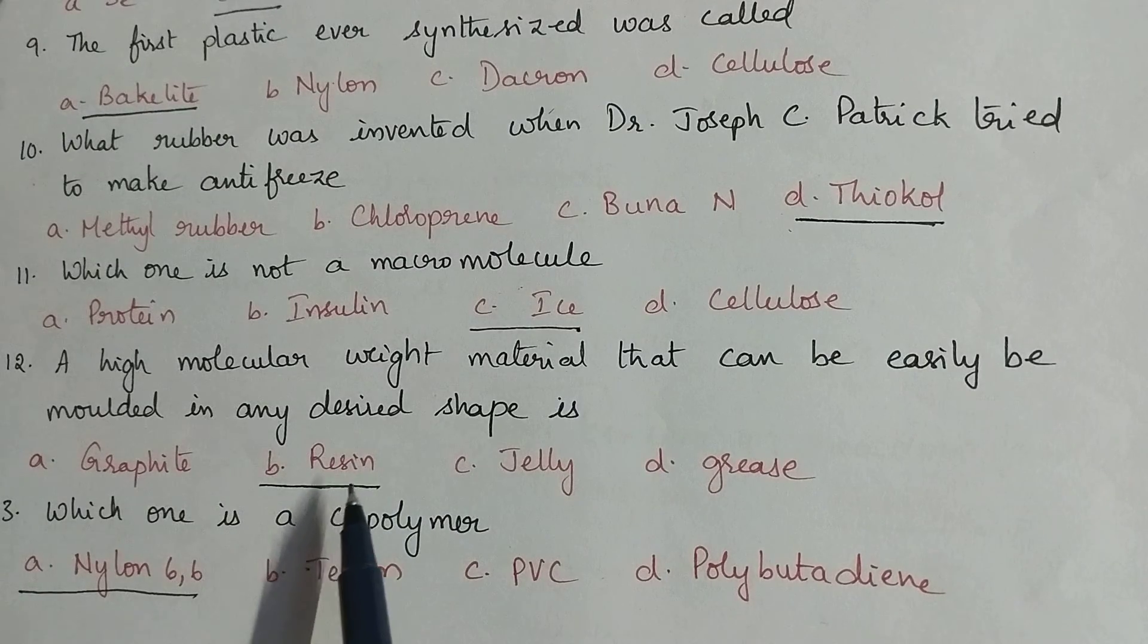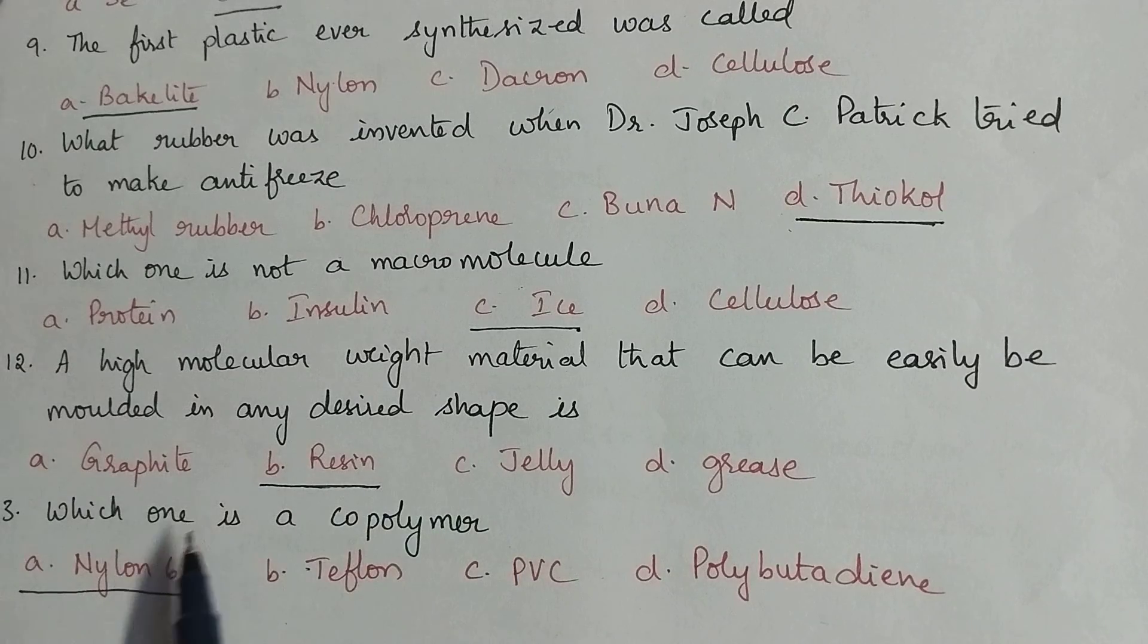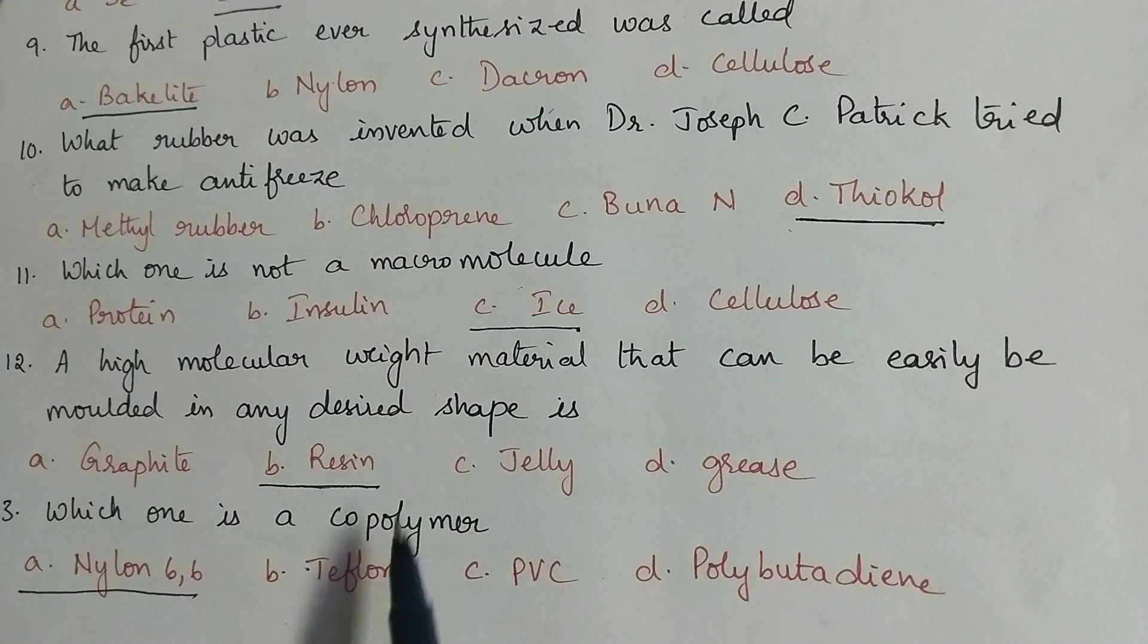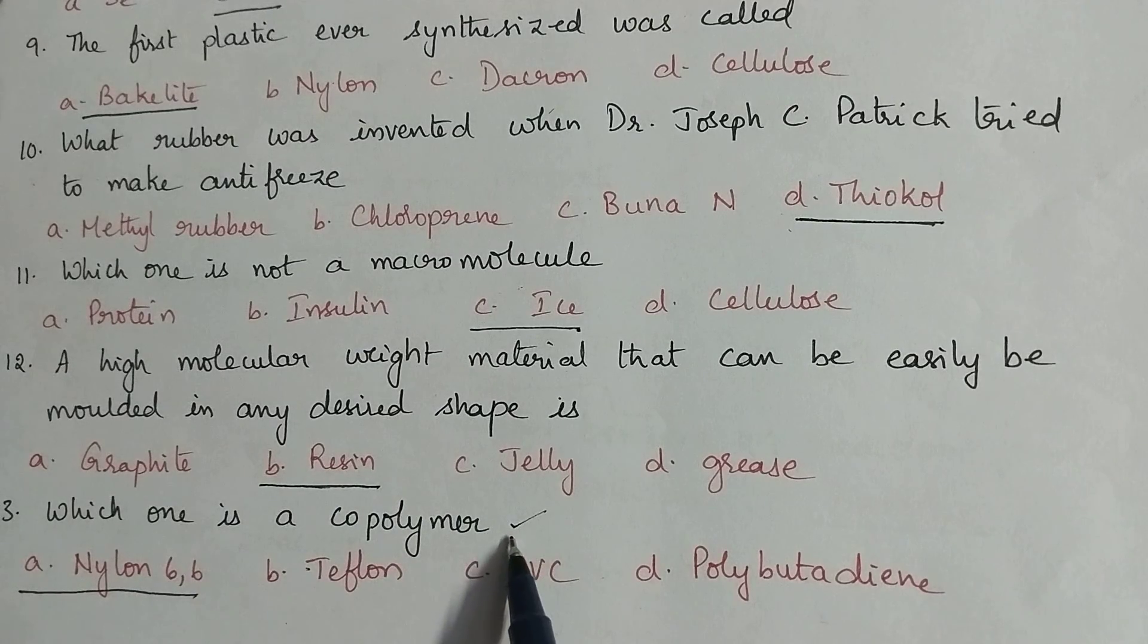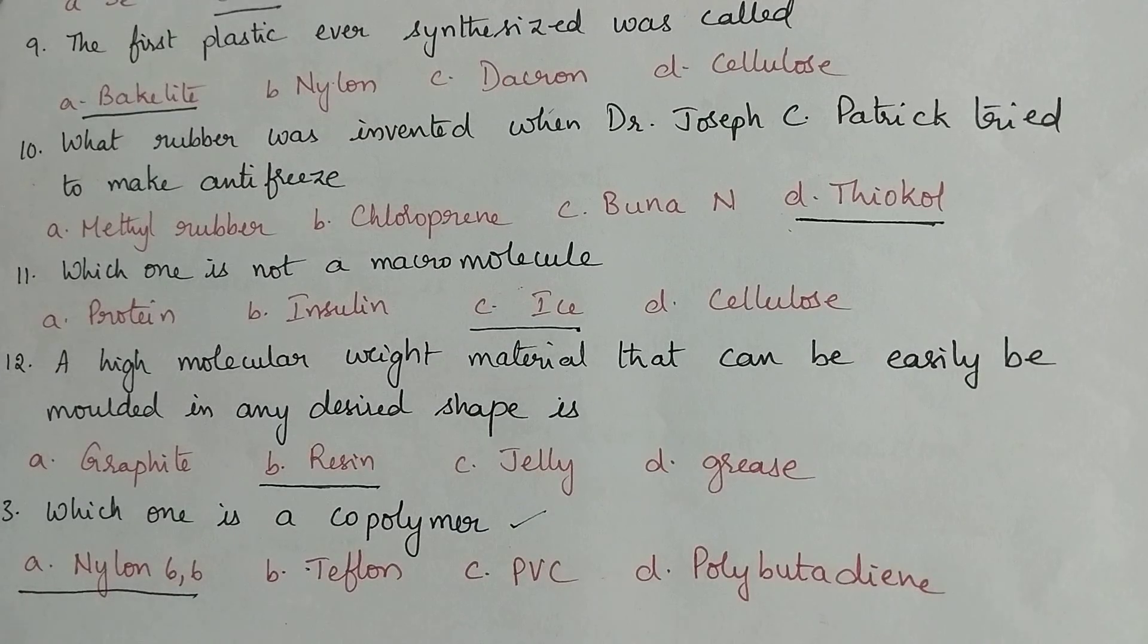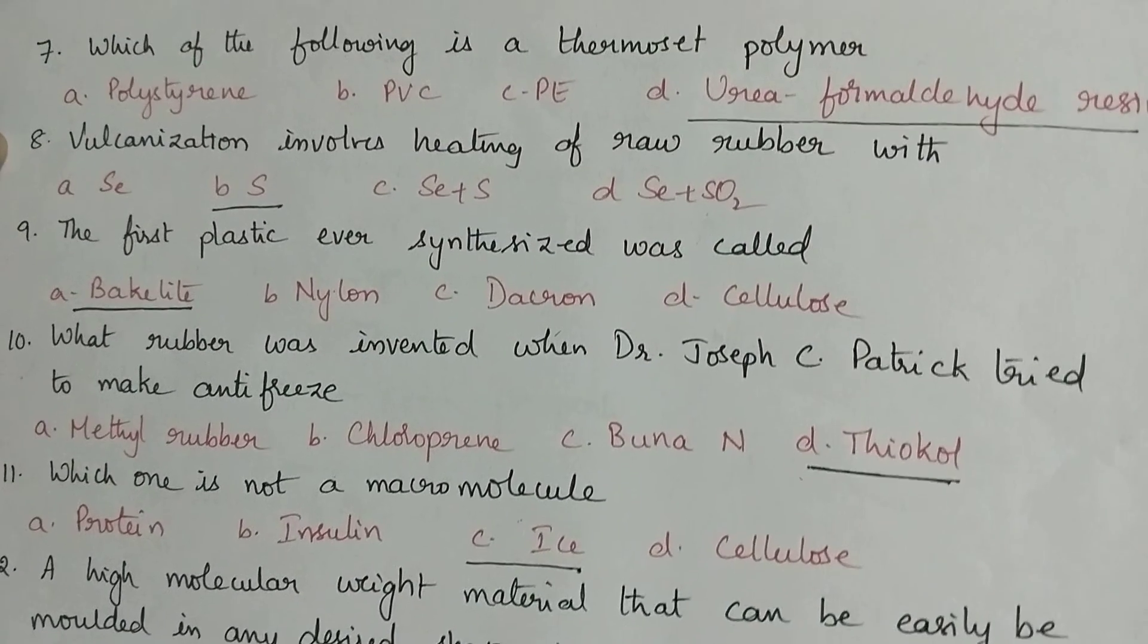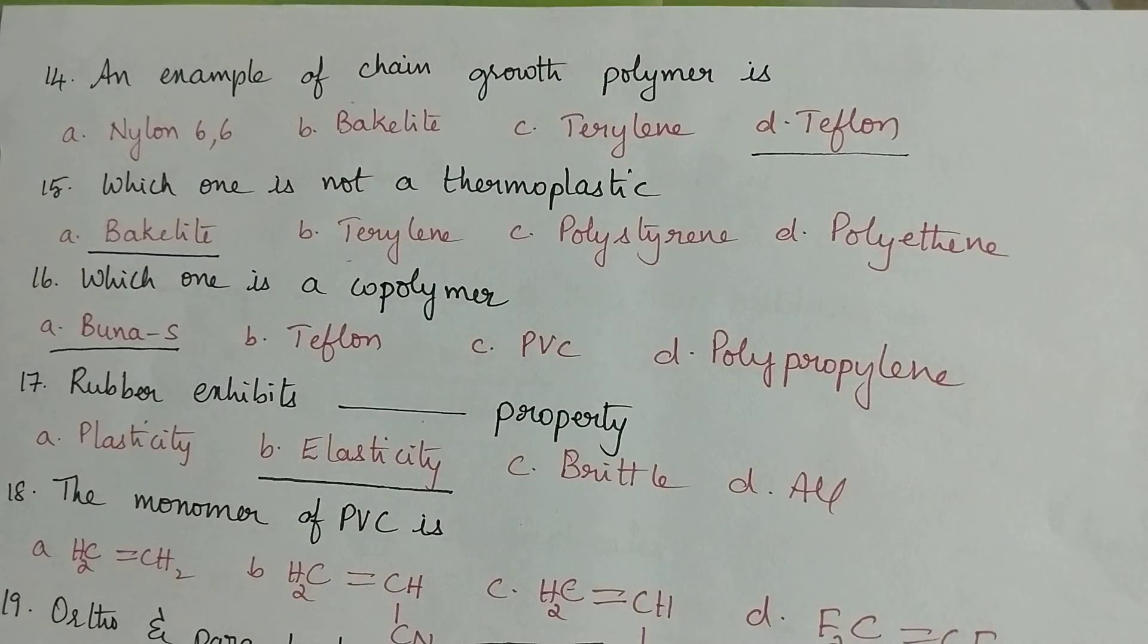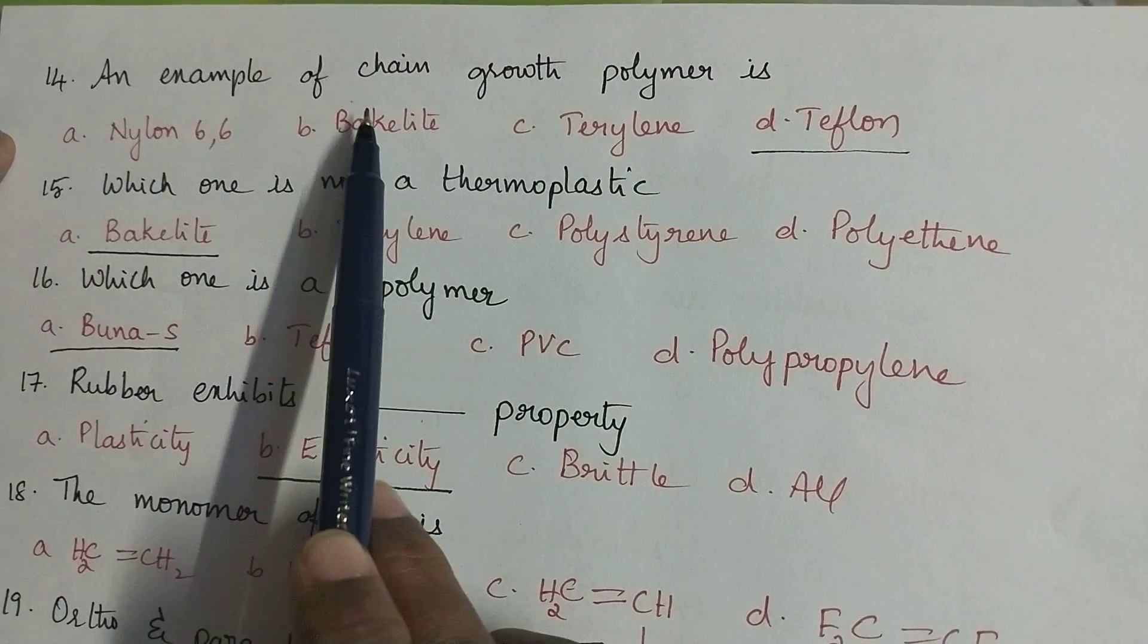Which one is a copolymer? A copolymer is obtained by the reaction between the monomers having different chemical structure, so Nylon 66 is the copolymer.